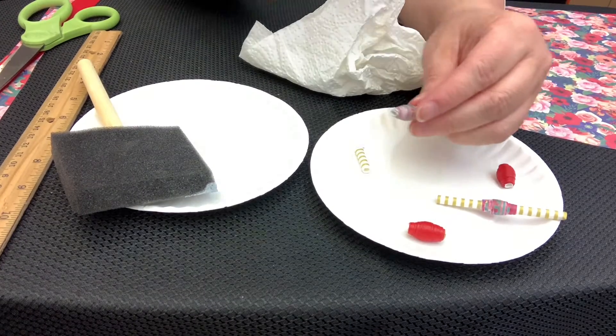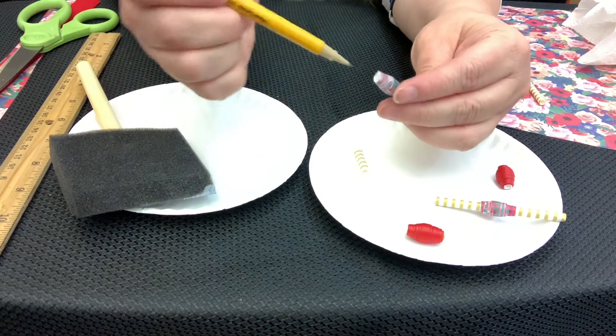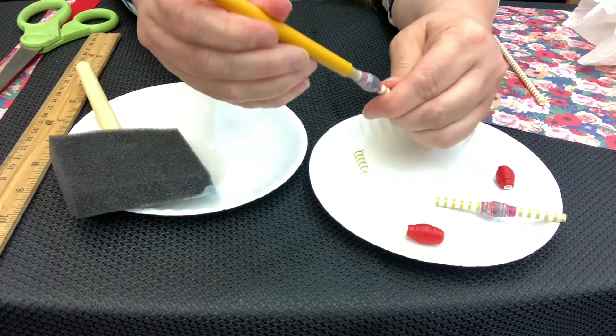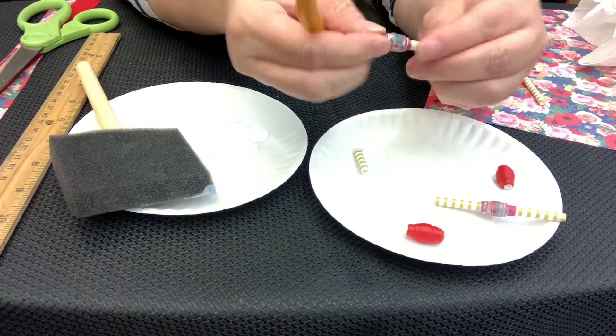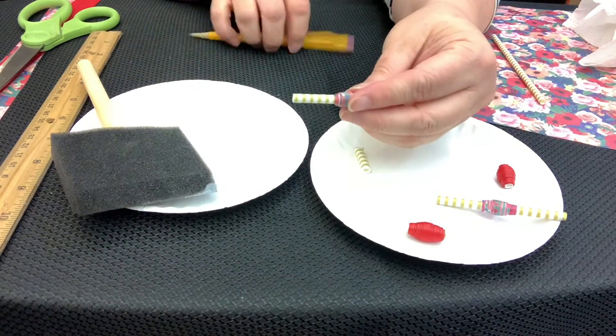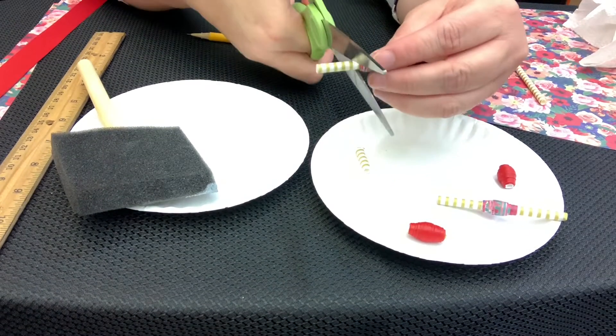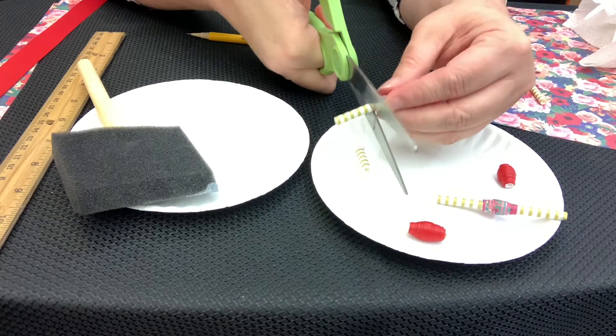Now the straw may collapse a little. So take your pencil and put it inside and just roll it to fix any collapse.